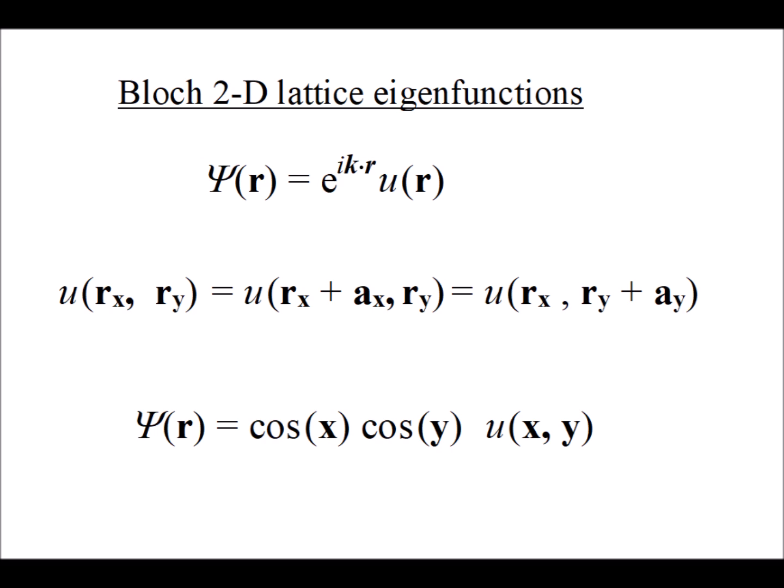We're going to show that the square of u of r is periodic in both the x and y dimensions by the exact same amount, because it's a square lattice. The lattice length in each direction is going to be a. The function is periodic with period a in both the x and y directions.